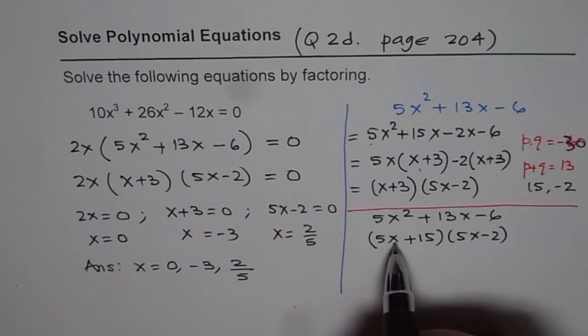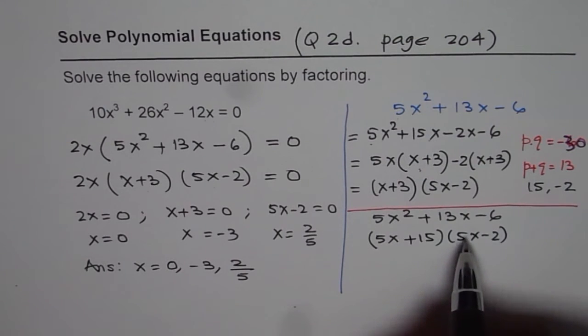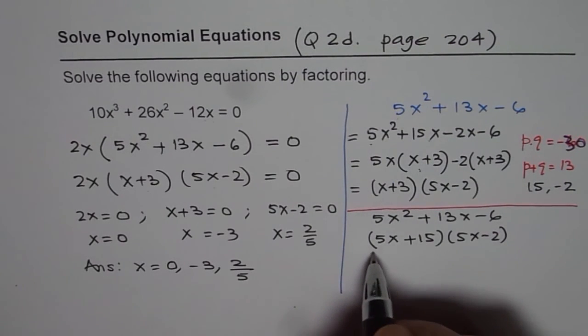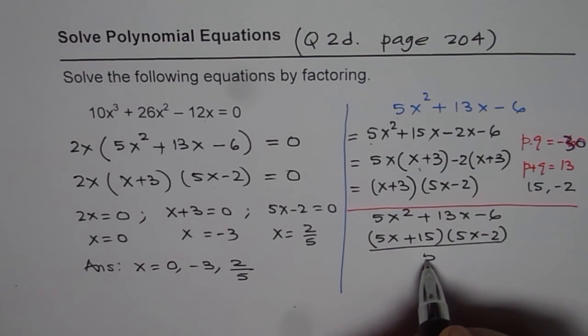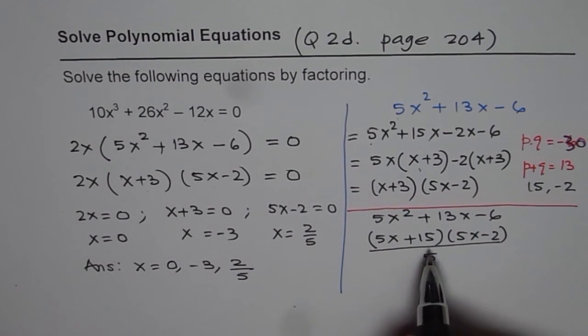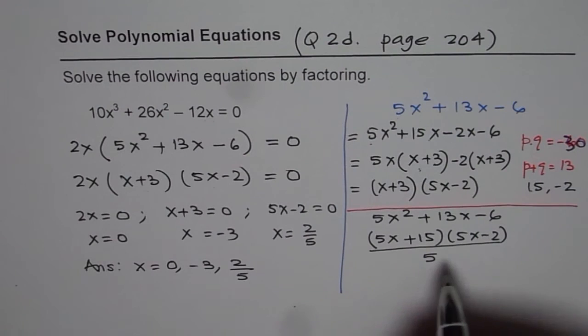But if I multiply 5x by 5x, I get 25, not 5. Since I need 5, I will divide this by 5. Got it? So, that becomes my factored form.